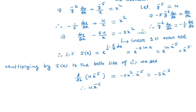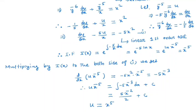So u times x to the power minus 5 equals the integral of minus 5x to the power minus 3 dx plus C, which gives 5x to the power minus 2 divided by 2 plus C. Therefore the general solution is u equals x to the power 5 times (5x to the power minus 2 divided by 2 plus C). Since u equals y to the power minus 5, this is the general solution of the ODE.